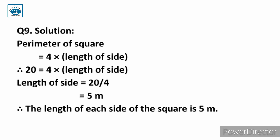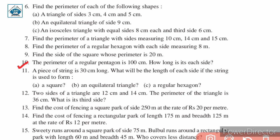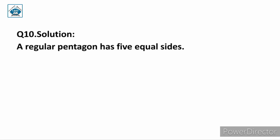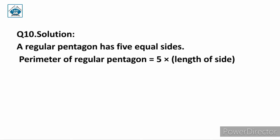Question number ten: the perimeter of a regular pentagon is 100 centimeter — how long is each side? A regular pentagon has five equal sides. The perimeter is given as 100 centimeter, and we are asked for the length of each side. Since it is a regular pentagon, perimeter equals 5 into length of each side.